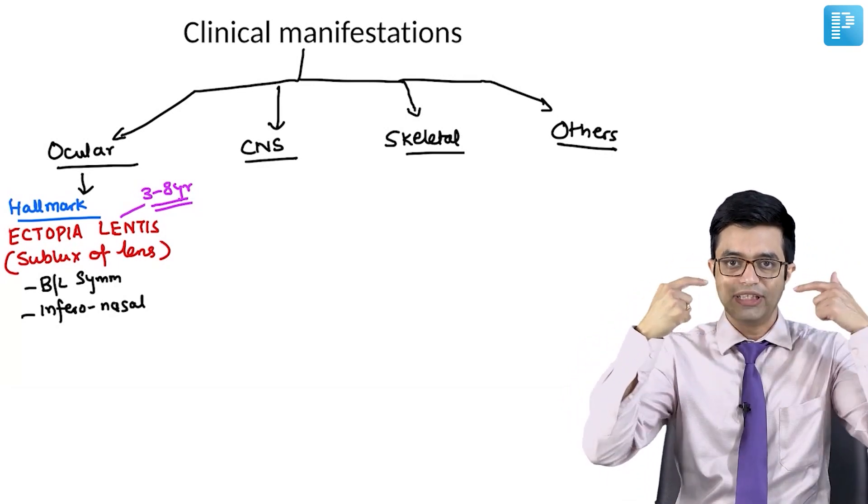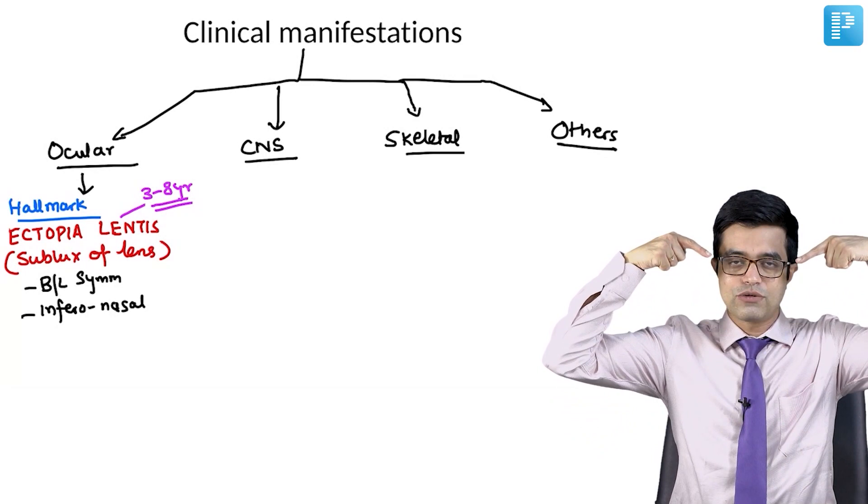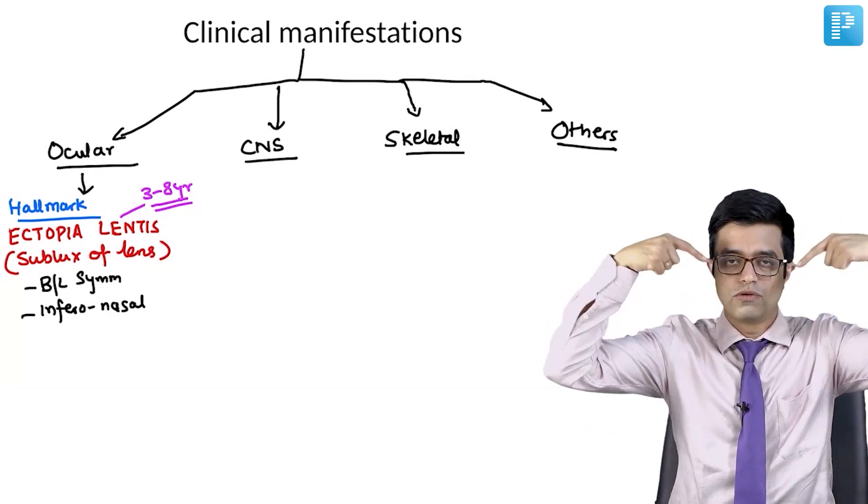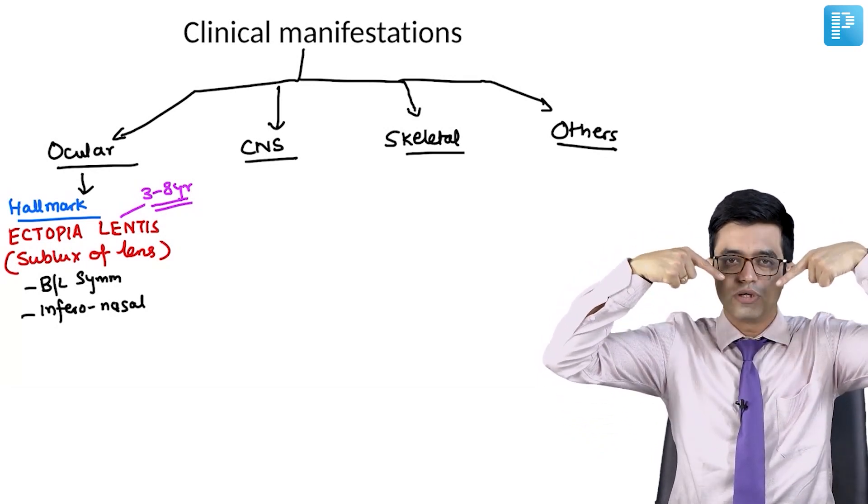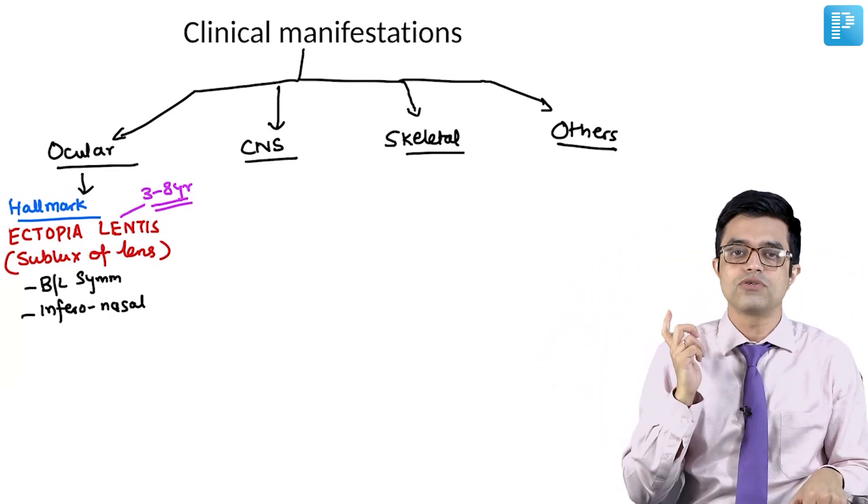Inferonasal means down and towards the medial side, towards the nasal side. Both the eyes you will have the dislocation occurring like this, towards down and towards the nose. Inferonasal dislocation is seen.